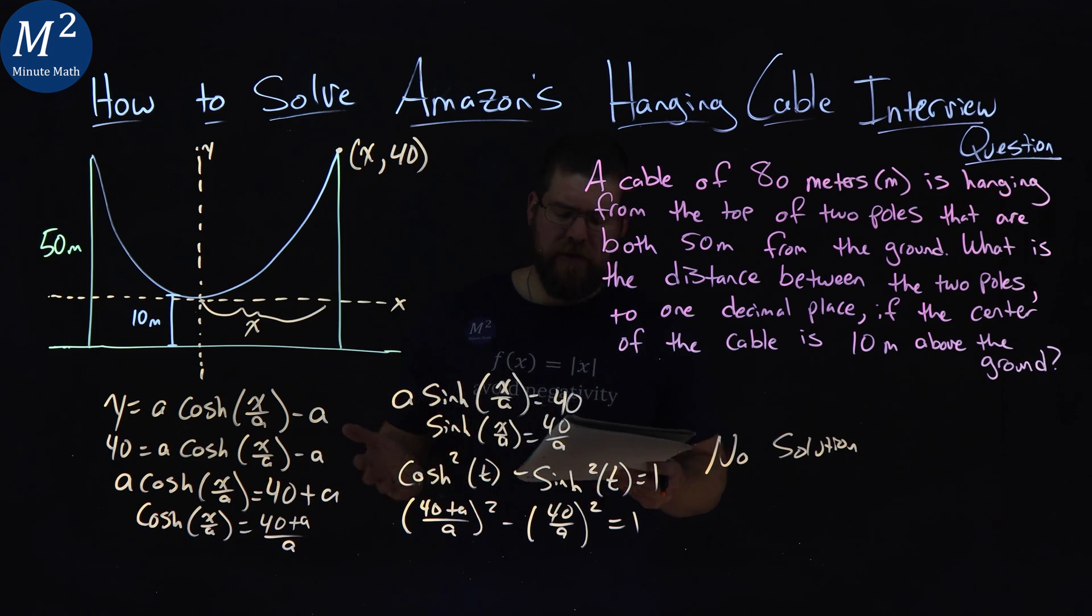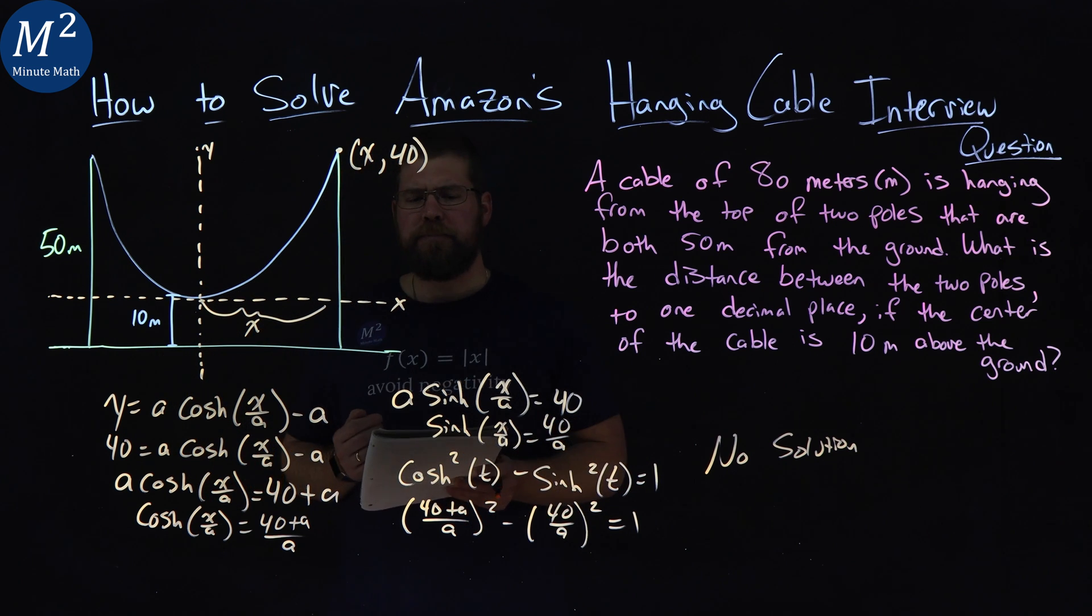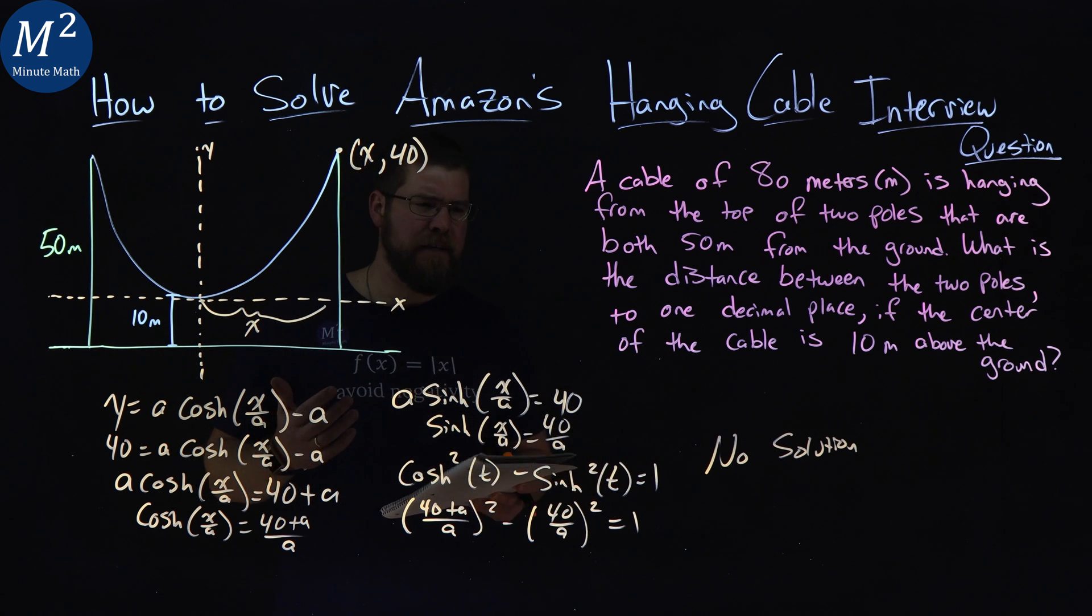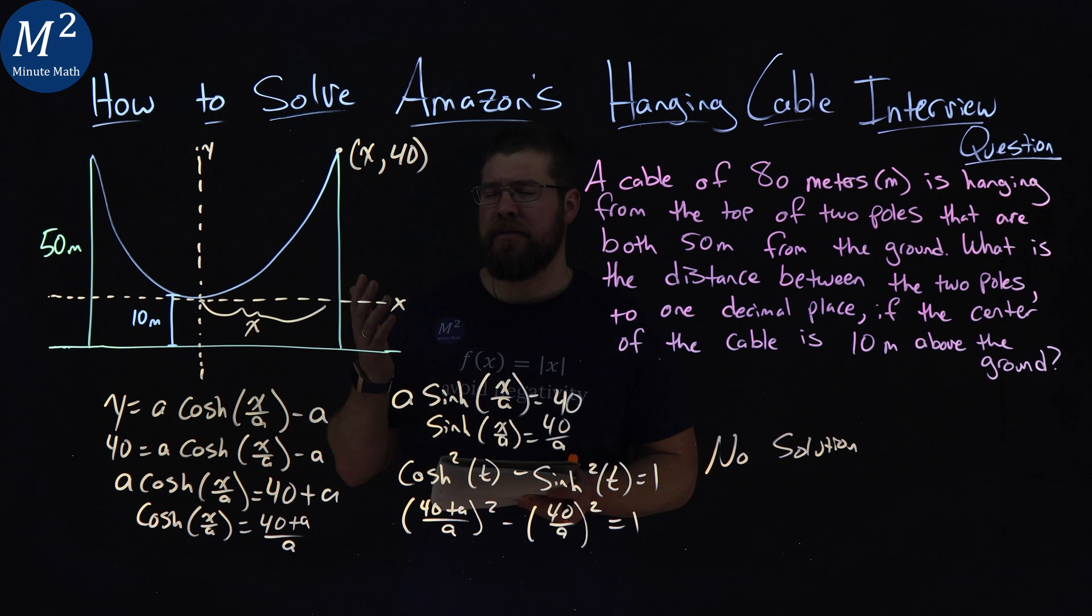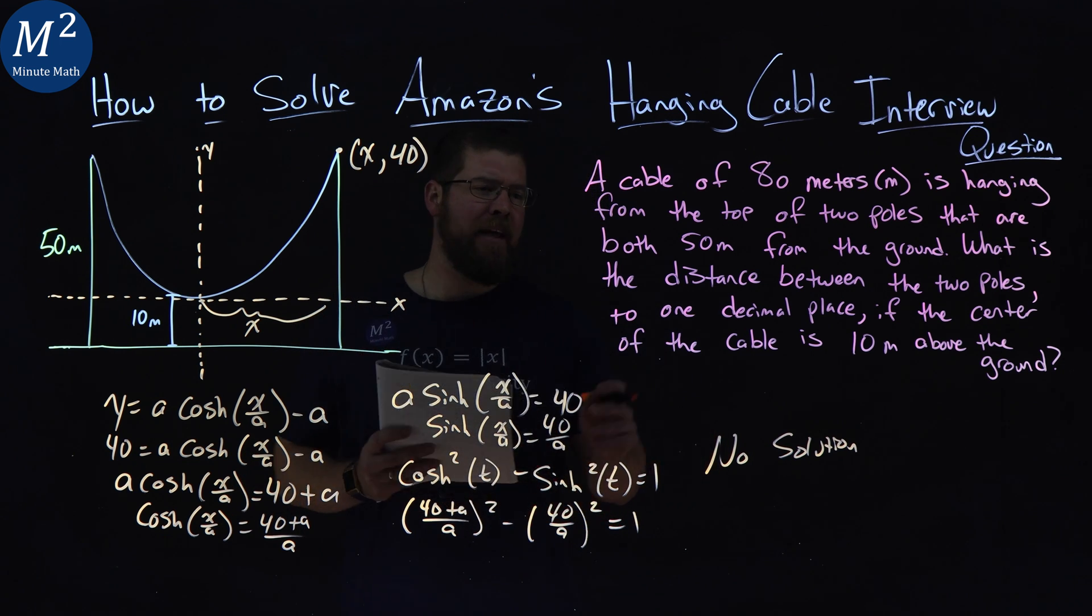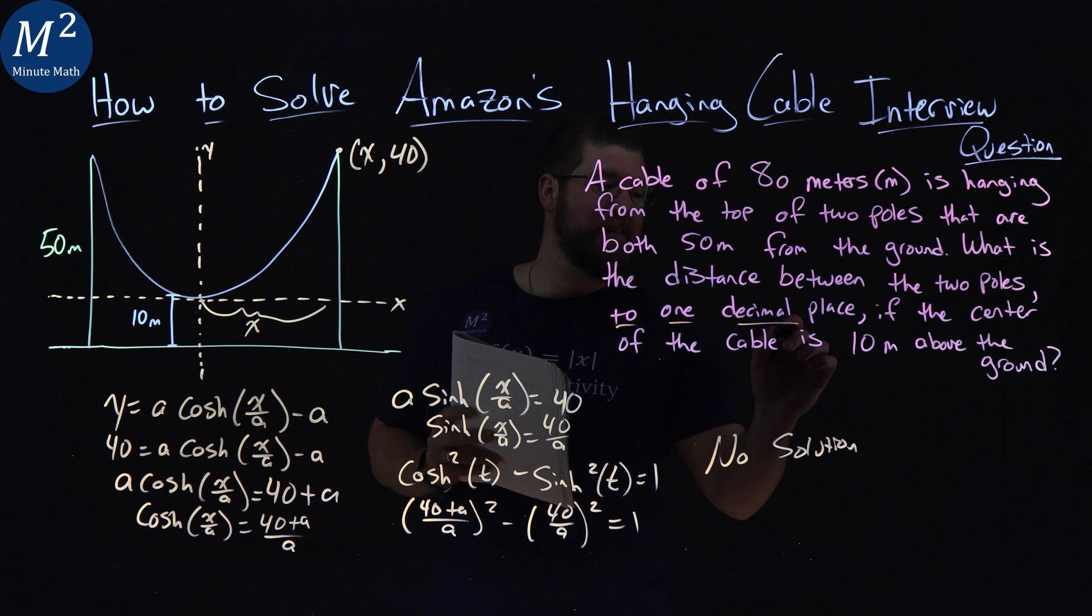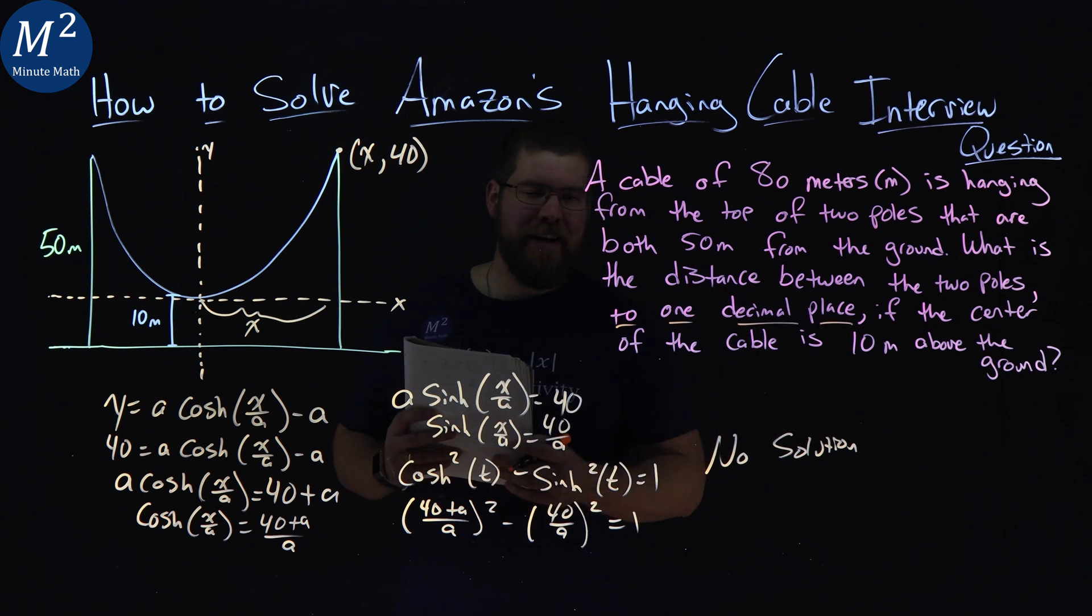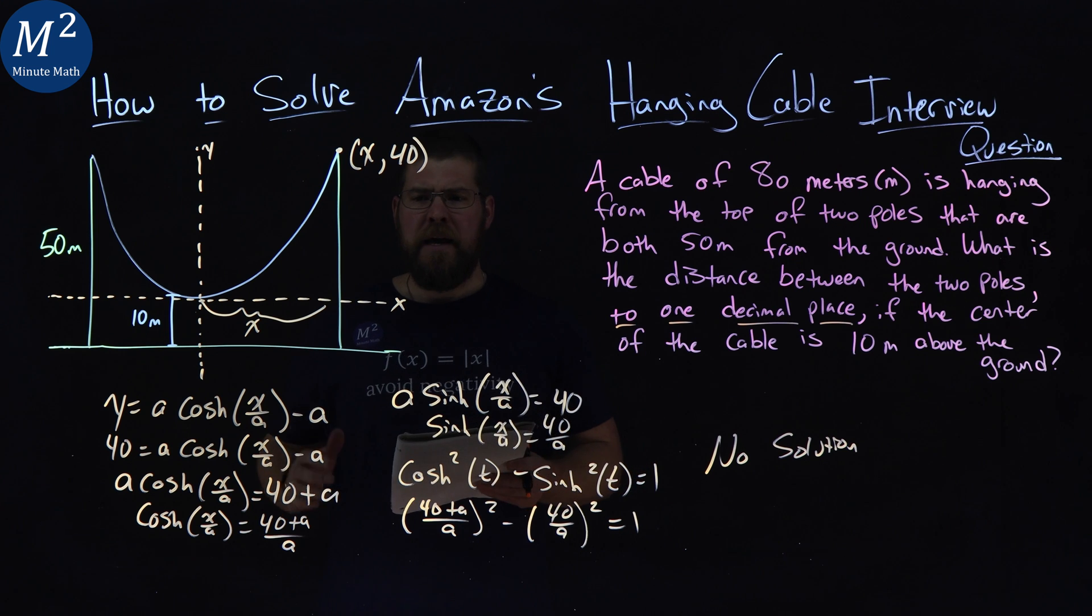So what happens here? What's going on? Well, the trick here is this problem actually can't be solved. And this is an important interview question for them. And I think the to one decimal place really is the kicker here that makes you think that you can solve this problem. And the answer is actually going to be zero.